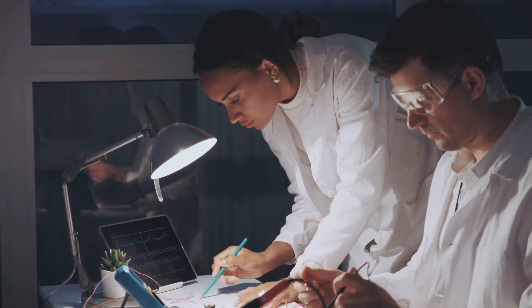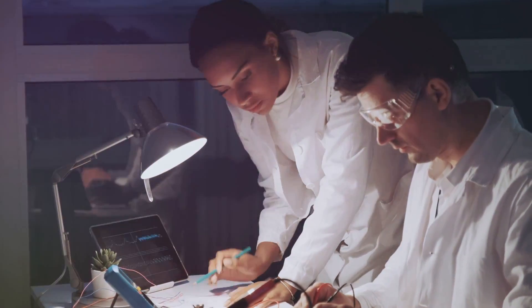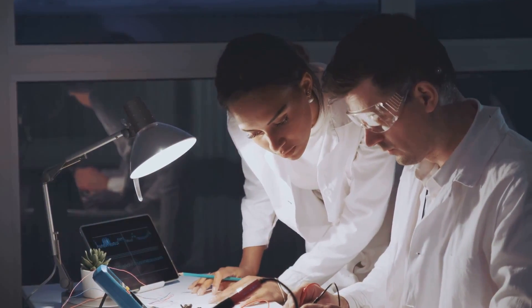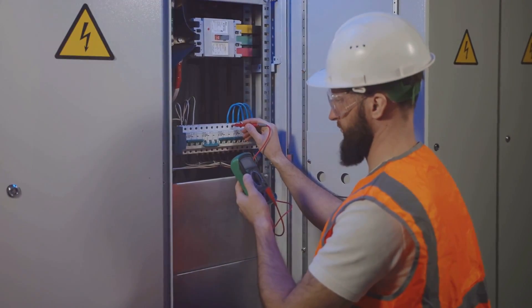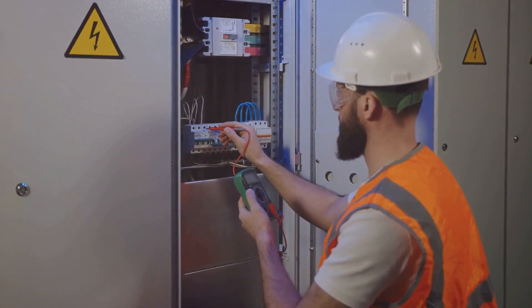However, if the multimeter shows a resistance value that is too high or too low, or even an open circuit, then you've found the problem. An abnormal reading means that the solenoid coil is faulty and needs replacement.